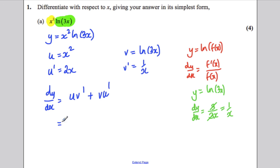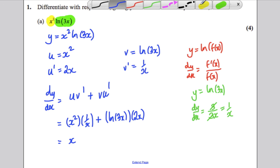Now just substitute in. So it would be x squared times this. Keep everything in brackets for now. Don't try and oversimplify early on. Plus ln of 3x multiplied by 2x. Okay, x squared times 1 over x is simply x. And it's good practice to bring the 2x in front of the ln here. So it's good practice to just write that as 2x ln of 3x.